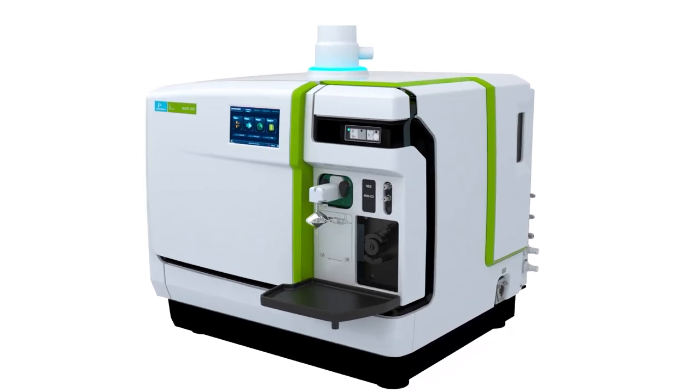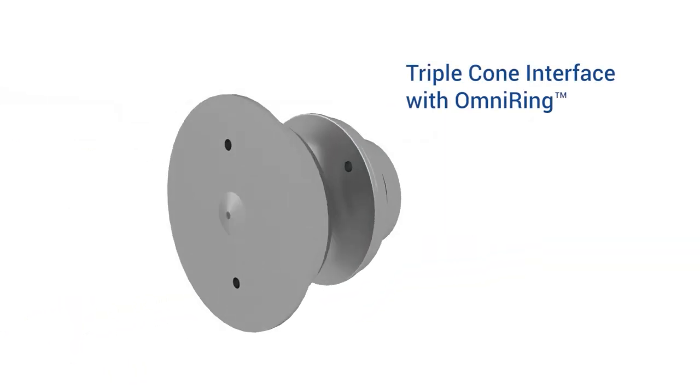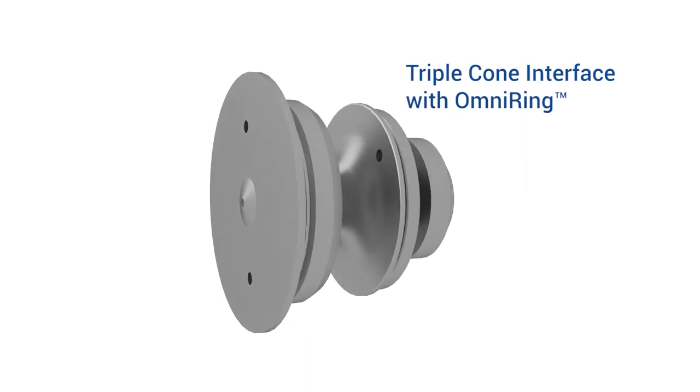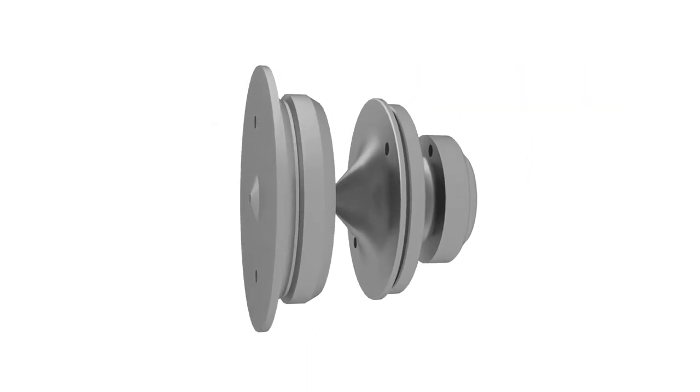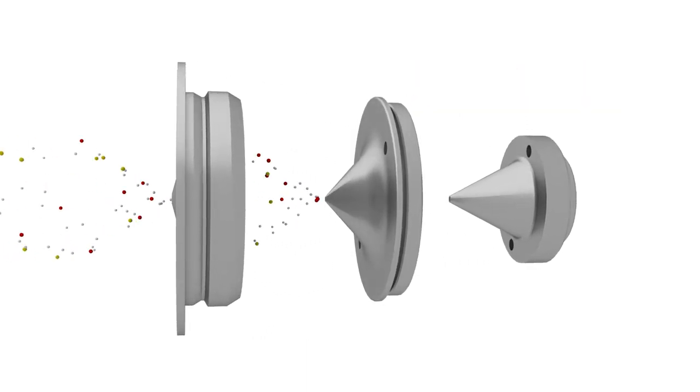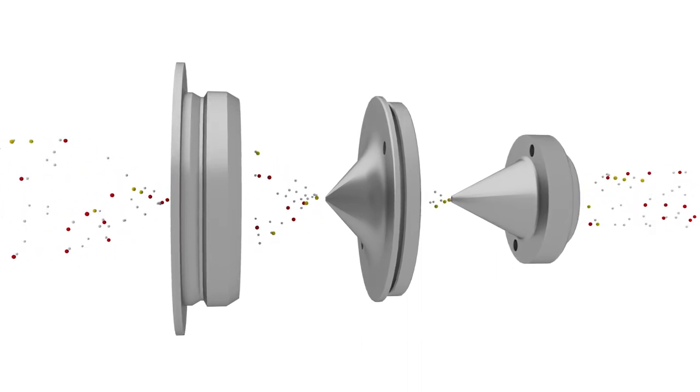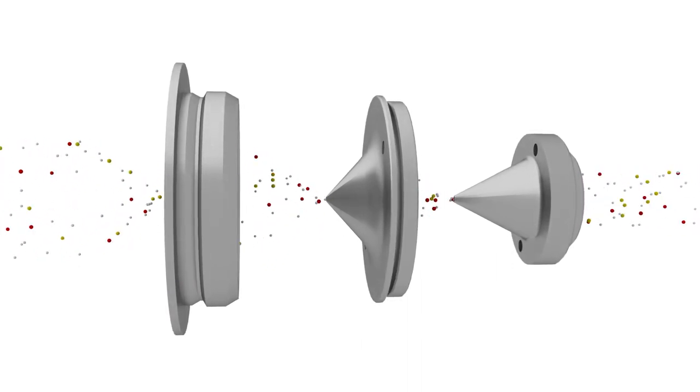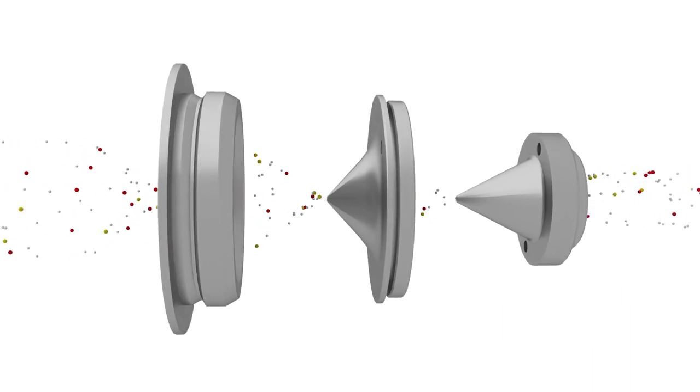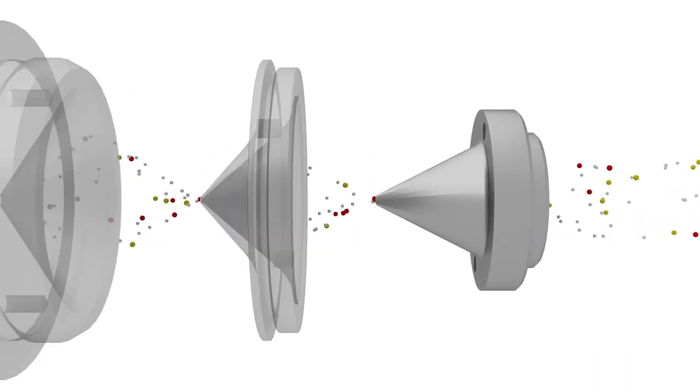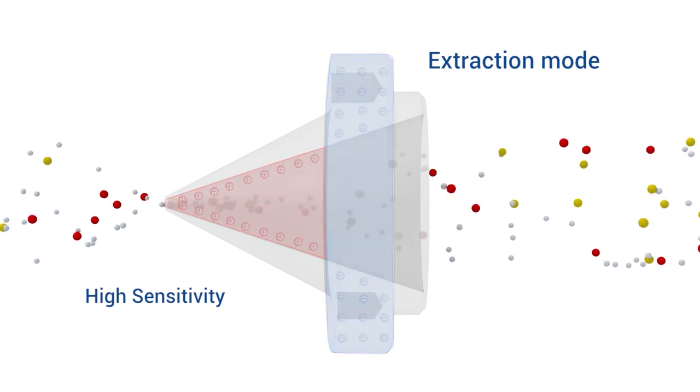The NexION 2200 ICP-MS features a triple cone interface with patented OmniRing technology, delivering unprecedented flexibility to handle a variety of applications without needing different inserts or lenses. By applying different voltages to the hyperskimmer and OmniRing assembly, three modes of operation are possible.